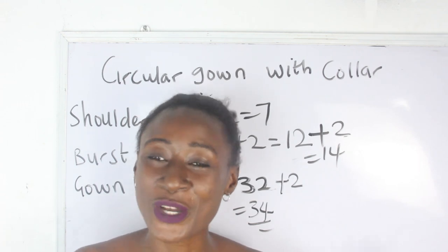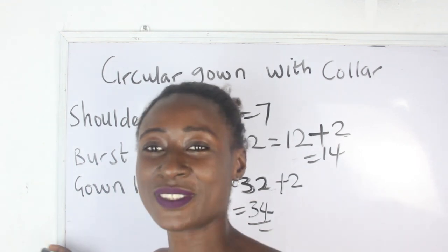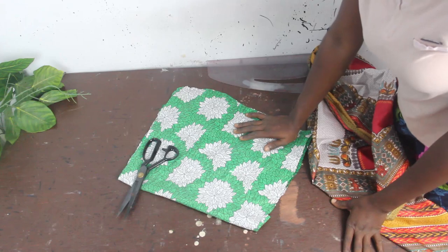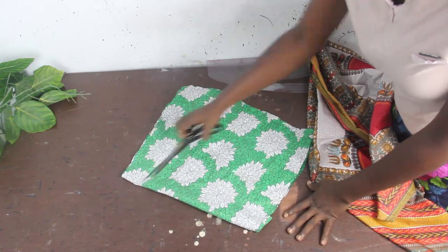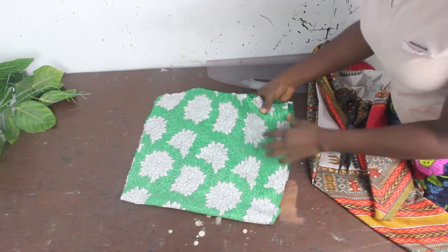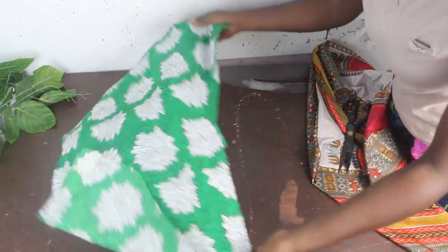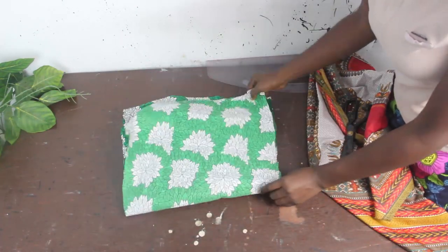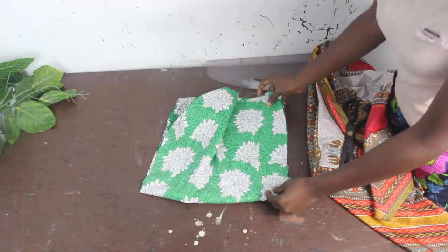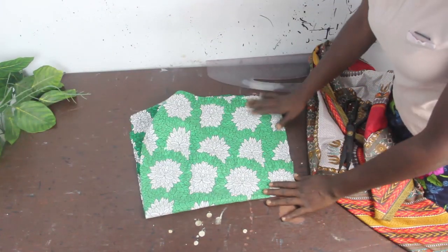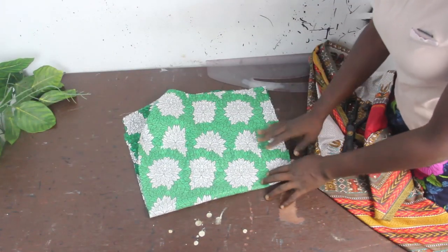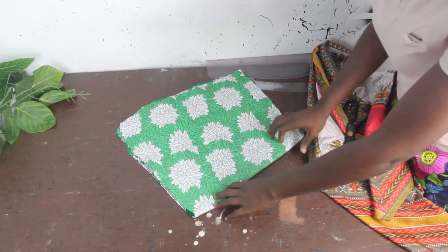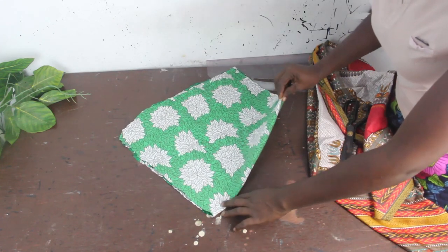Now let's move to the cutting part of this tutorial. I'm going to be showing you how to fold your fabric into 4. I'm using this fabric as an example. The first thing you will do is fold your fabric into 2 this way, because what we want to achieve is a flare, a circular shape.